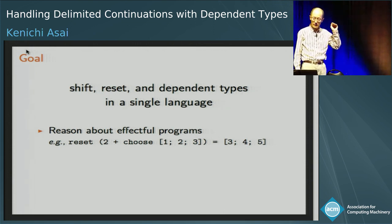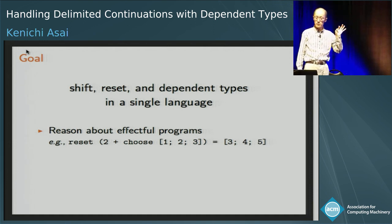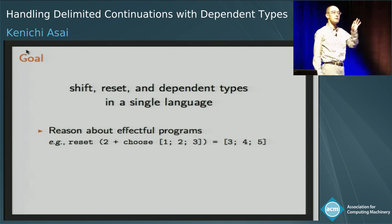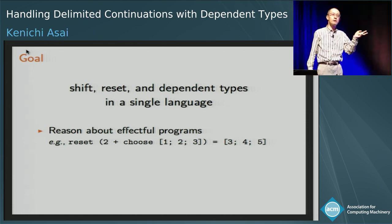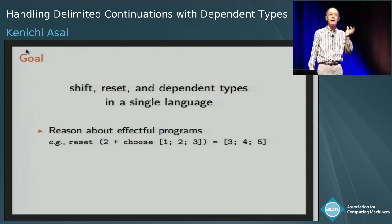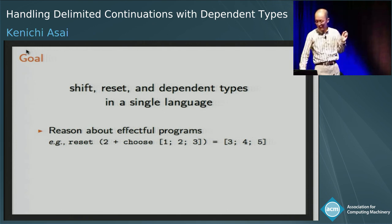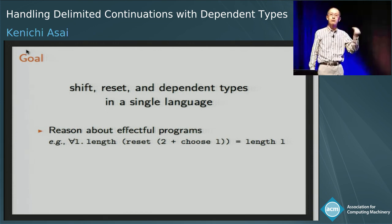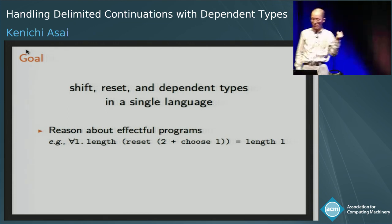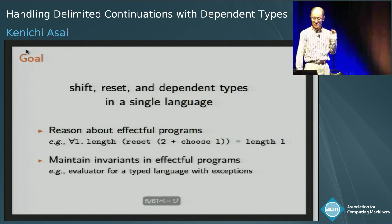If we have dependent types in the same language too, it means that we can reason about this kind of programs in the same language. For example, if we have three choices in the input program, then we have three output candidates. We can say that for all L, the number of elements in the input is equal to the number of candidate results.